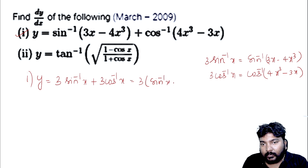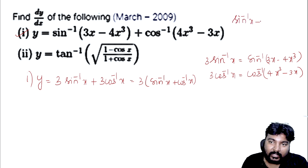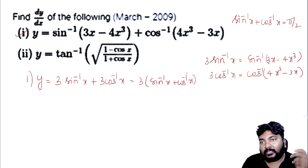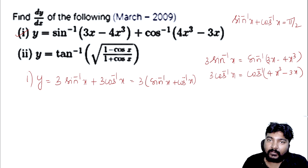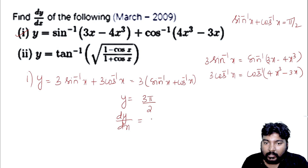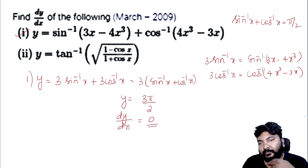So we get 3 times sin⁻¹x plus cos⁻¹x. Using the important result: sin⁻¹x plus cos⁻¹x equals π by 2. So the expression becomes 3 into π by 2, which is 3π by 2. This is a constant, so its derivative d/dx is 0.